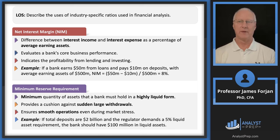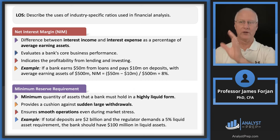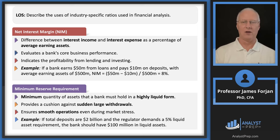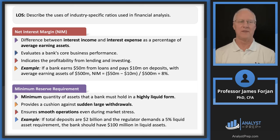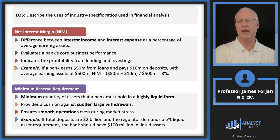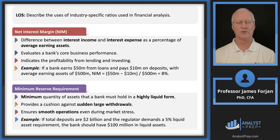Net interest margin is the difference between interest income and interest expense. A financial institution's revenues are completely different from Walmart's — the bank pays interest on deposits and receives interest on loans. Net interest margin is the spread: you want to pay depositors 1% and charge borrowers 8% or 12%. Minimum reserve requirements ensure smooth operations and maintain a minimum quality of highly liquid assets.